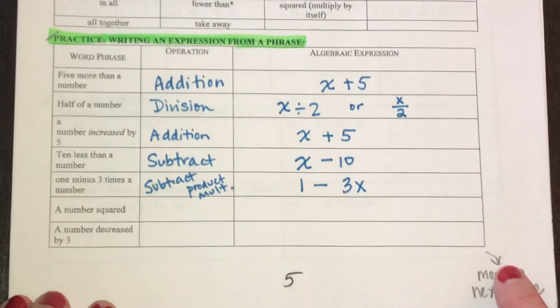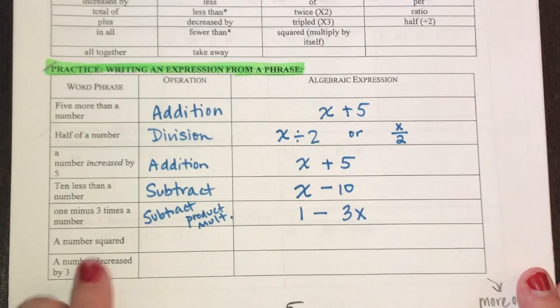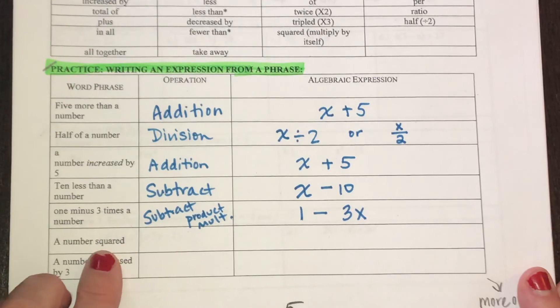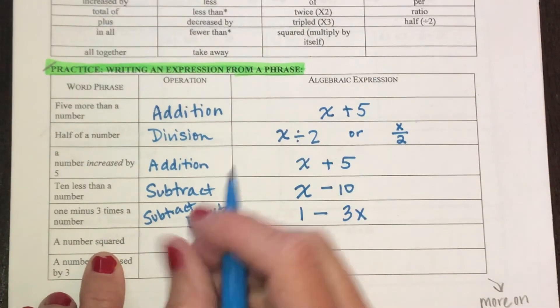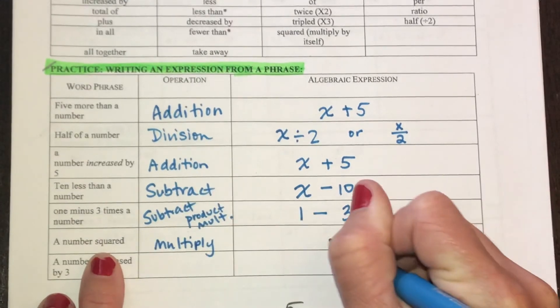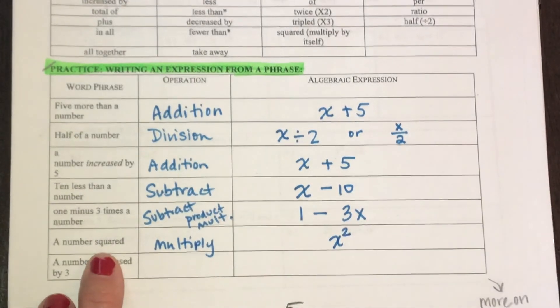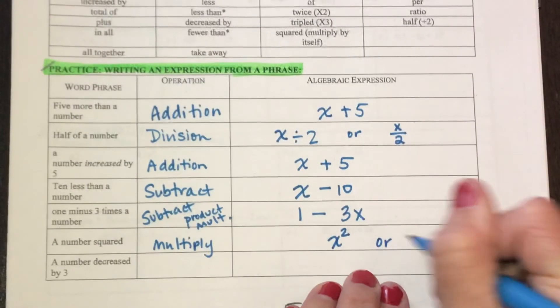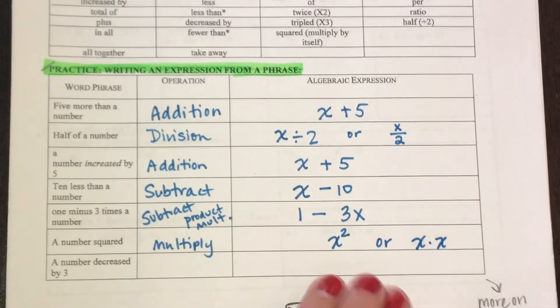Okay, there's a couple more on this page and then I have some more on the next page. A number squared, a number squared, this is going to be a multiply. And a number squared is a number times itself. You could also write that number multiplied by itself.